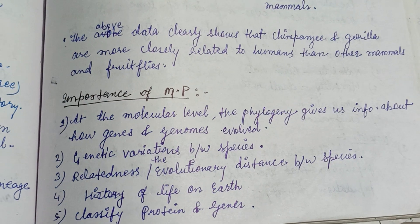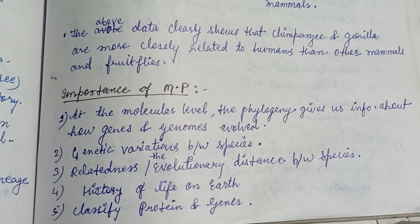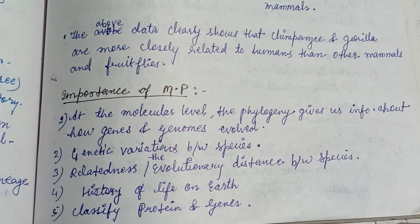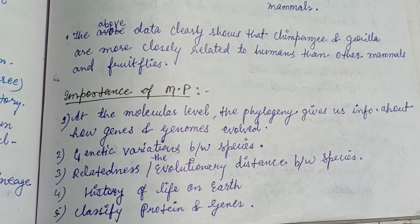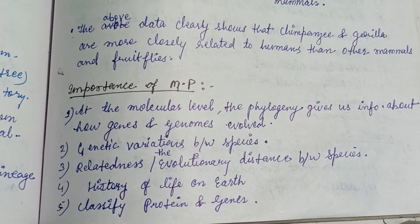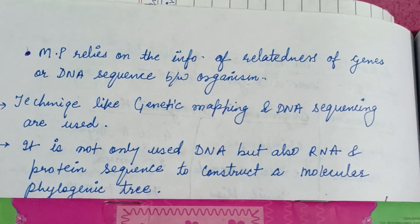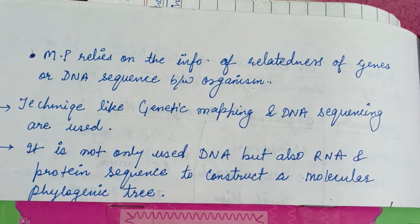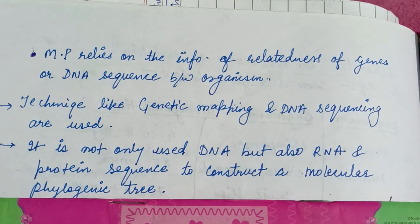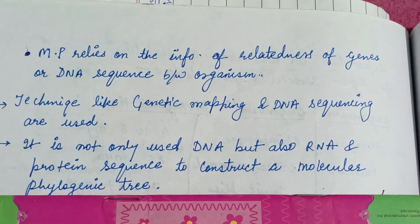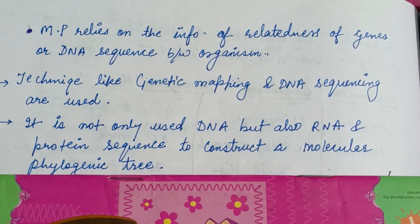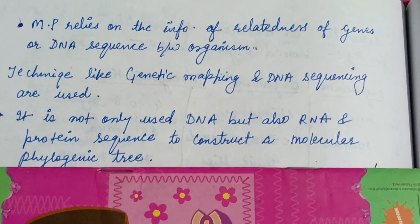At the molecular level, phylogeny gives us information about how genes and genomes evolve, genetic variation between species, relatedness or evolutionary distance between species, history of life on earth, and unclassified proteins and genes. In conclusion, it is not only DNA but also RNA and protein sequences that are used to construct a molecular phylogeny tree. Molecular phylogeny relies on the information and relatedness of genes or DNA sequences between organisms. Thank you for watching.